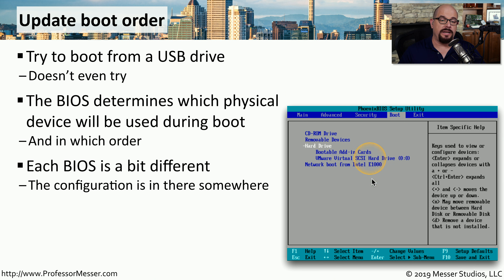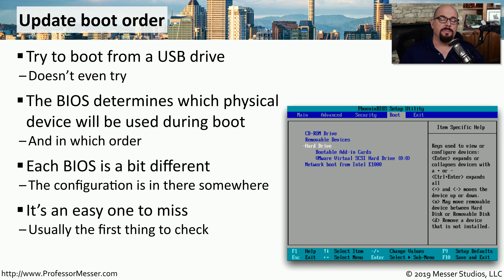If you look at the configuration settings of your BIOS, you'll be able to find the boot section, which shows what devices are used to boot from and in what order. On this computer, for example, we try booting from the CD-ROM drive, then any removable devices, and then finally the hard drive. If you're having problems booting from something other than the normal storage drive, it's probably one of these configurations inside your BIOS. Fortunately, it's very easy to find and change — you can boot from one of those other drives just by modifying the boot order.